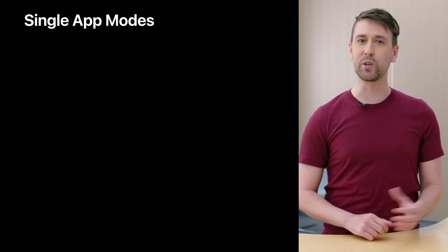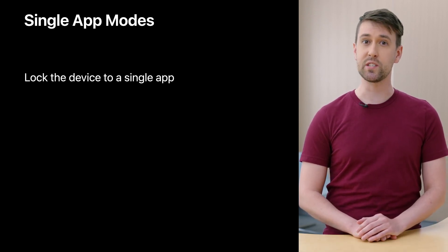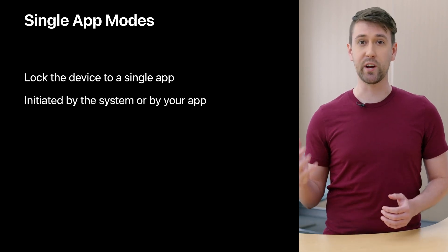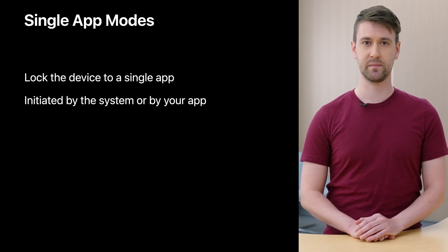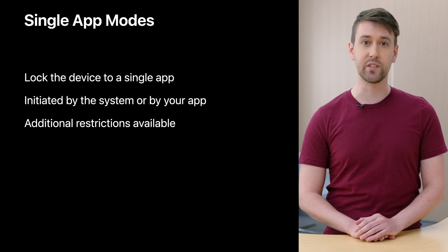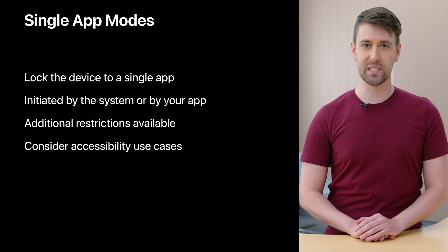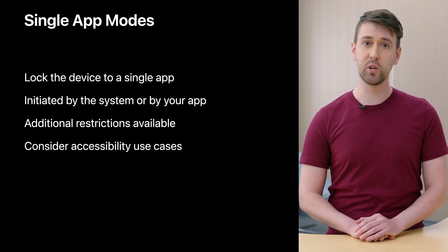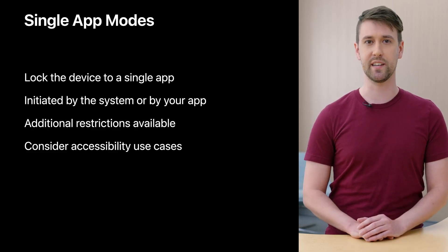Single app modes let you as a developer serve your users in really unique ways by restricting certain behaviors on iOS and iPadOS devices. These modes let you lock the device to a single app. Depending on the mode, these restrictions are either initiated by the system or by your app, which gives you control over the timing between a restricted and unrestricted state. You're also able to apply additional restrictions on top of single app mode, like whether auto lock is enabled. Let's remember to consider accessibility use cases — you should make sure people who rely on accessibility features have the ability to turn them on and use them even if the device is restricted. This ensures your app is inclusive to people using assistive technologies.